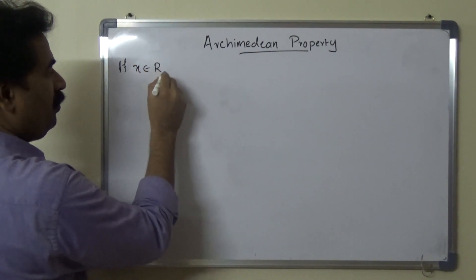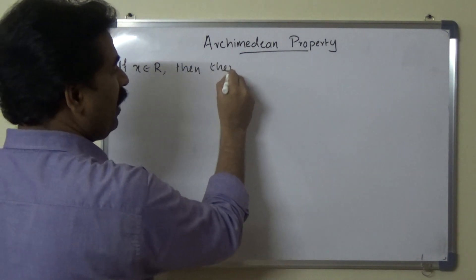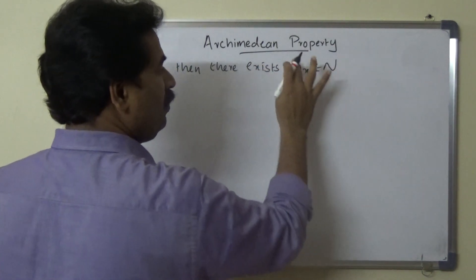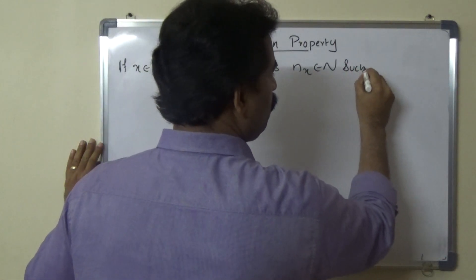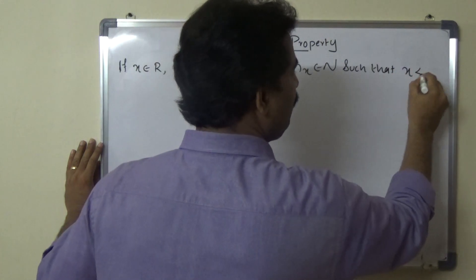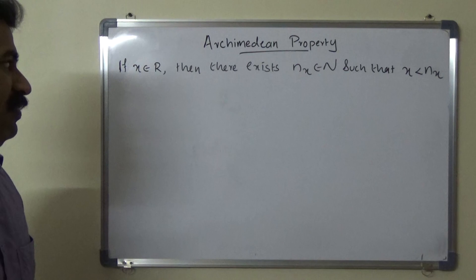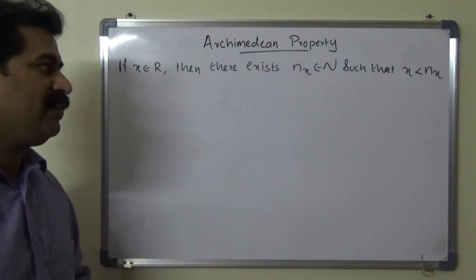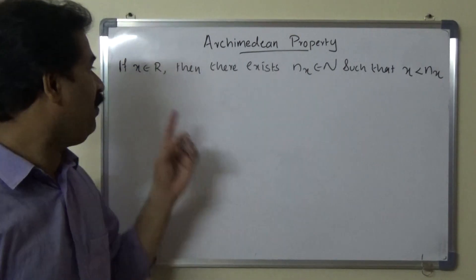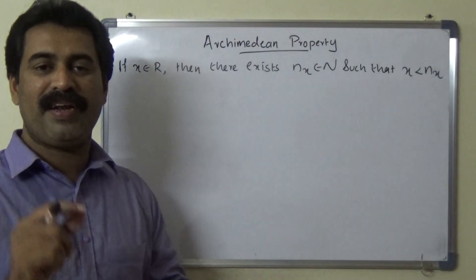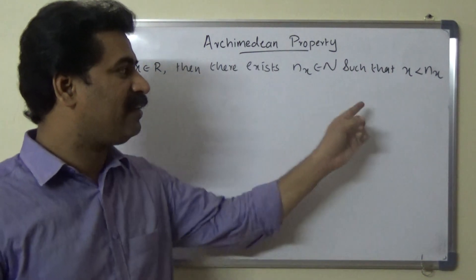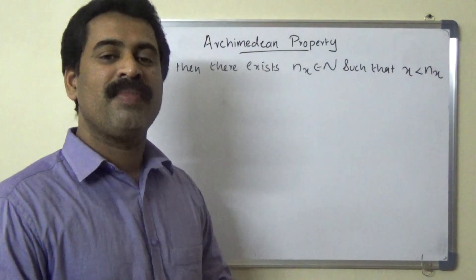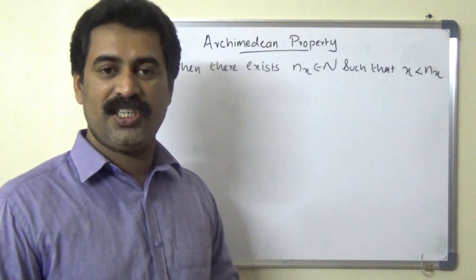The statement is: if x belongs to R, then there exists nx belonging to capital N such that x is less than nx. That means the set of natural numbers is not bounded above.